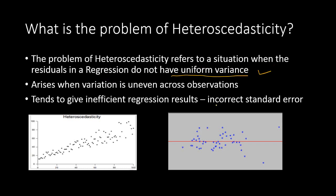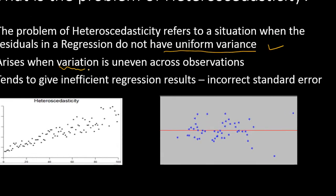This is one of the assumptions in the least square regression — that the errors should have uniform variance. This problem arises when there is uneven variation across observations, and it is mostly seen in cross-section data, where the variation actually changes with respect to the observations.